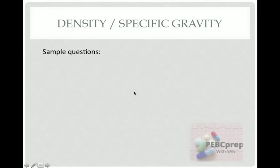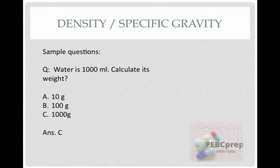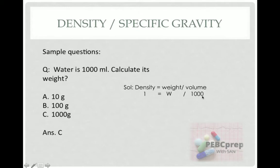A sample question: water is 1000 mL — calculate its weight. We know that the density of water is 1 g/mL. Options: A: 10 grams, B: 100 grams, C: 1000 grams. The answer is C. Solution: density equals weight divided by volume. Density of water is 1, volume is 1000 mL, so weight equals 1 × 1000 = 1000 grams.